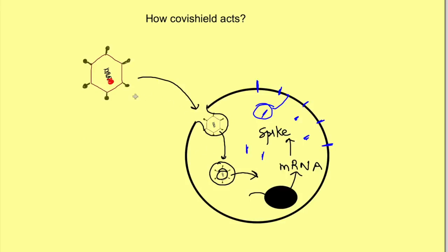Remember that this adenovirus is not doing anything — it is not replicating or dividing in the cell. It is only the coronavirus spike protein that is being expressed. So the adenovirus is acting as a vehicle which carries this coronavirus genome, and the cell is able to produce these spike proteins.